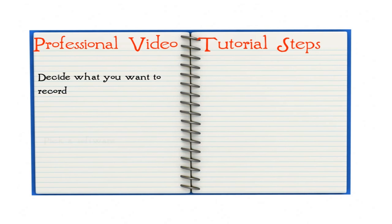Step 2: Pick a software. There are different software options out there that you can use, alone and in conjunction with others, such as Camtasia, AVI Screen, GoView, and Snagit, to create both moving and still shots of your screen.